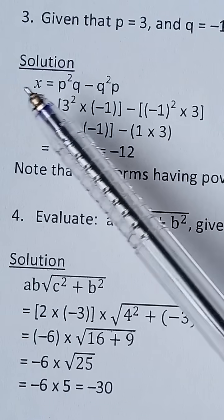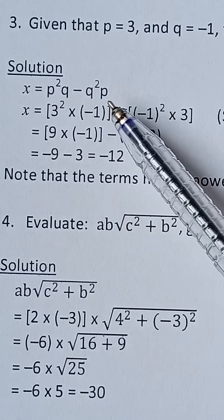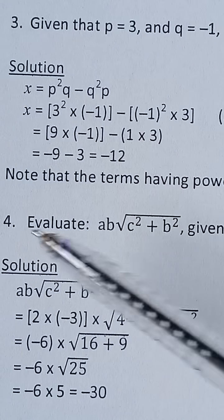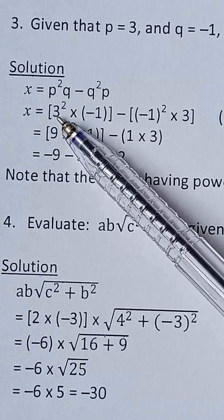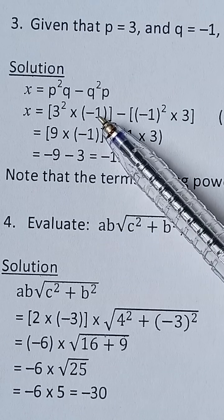So now, x is equal to p squared q minus q squared p. P squared, p is 3, so we say 3 squared multiplied by q, which is negative 1.